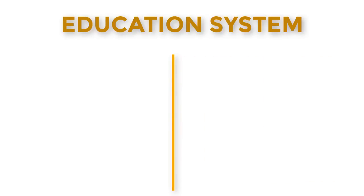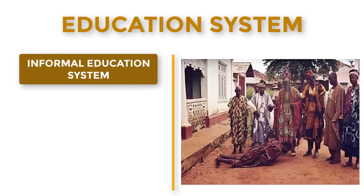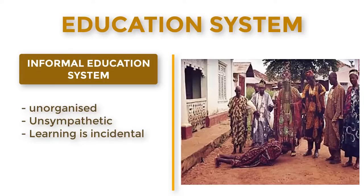Number three, the informal education system. It is a system of education, but it is informal — unorganized and unstructured. It is characterized by incidental learning because there are no organized curricula, programs, or planned lessons as such. We have now looked at the meaning of a system, examples of a system, and our area of interest — the educational system. We covered the three major parts: input, process, and product; mentioned suprasystem and subsystem; and identified the three types of educational systems: formal, non-formal, and informal.